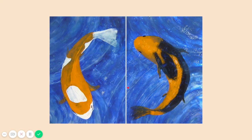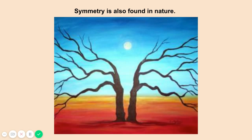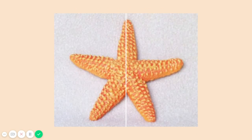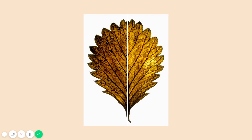Same with this artwork. If we were to fold this in half, I'm not sure if it would match up exactly. The fish's head would match up with the fish's tail — that's not symmetrical. So this artwork would not be symmetrical. Symmetry is also found in nature. Let's take a look at some examples: this starfish, this beautiful detailed leaf. We can see that symmetry is found in a lot of places in the world.